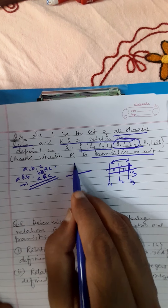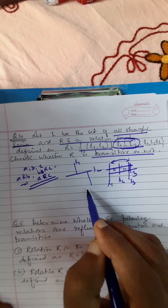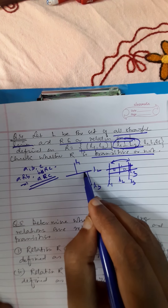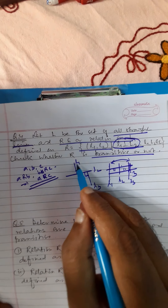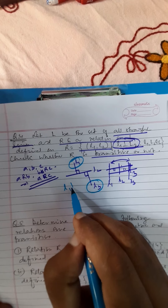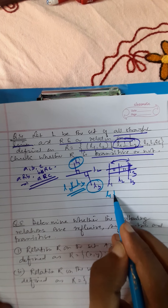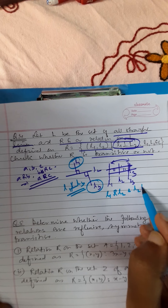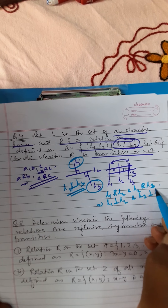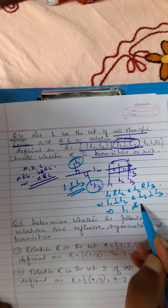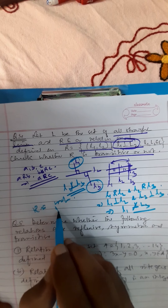L1 is perpendicular to L2, and L2 is perpendicular to L3. Is L1 perpendicular to L3? Never — L1 is not perpendicular to L3. So, L1 related to L2 and L2 related to L3 does not imply L1 is perpendicular to L3. Therefore, R is not transitive.